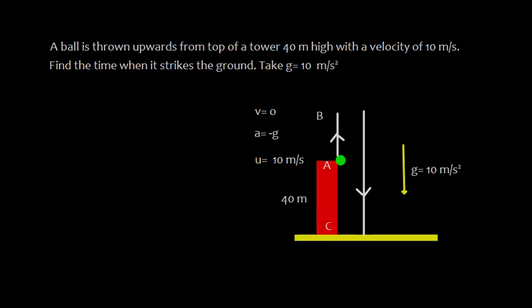Hi, here let us study this problem. A ball is thrown upwards from top of a tower 40 meters high with a velocity of 10 m/s. Find the time when it strikes the ground. Take g, acceleration due to gravity, as 10 m/s².